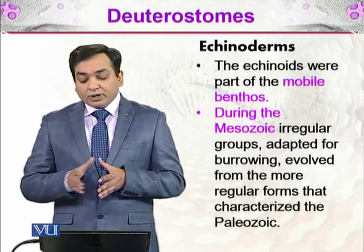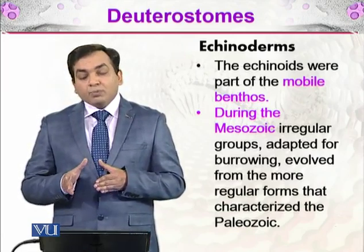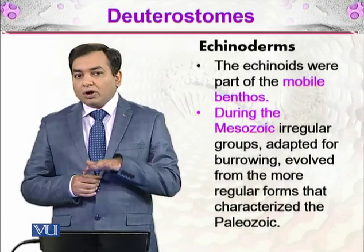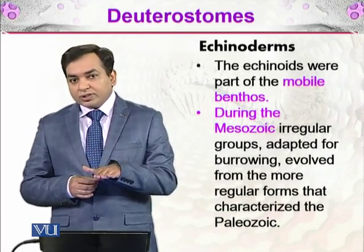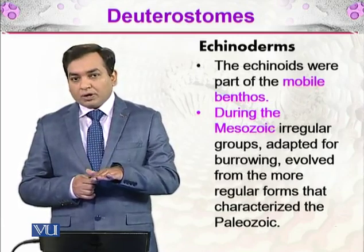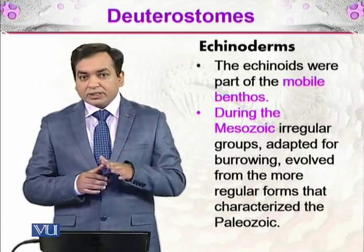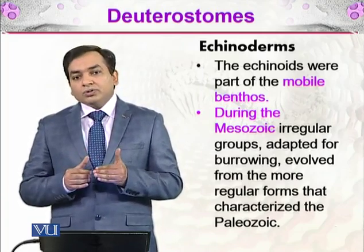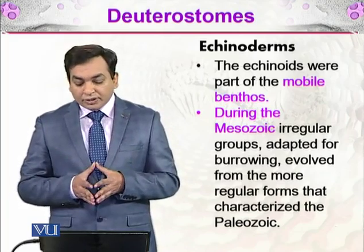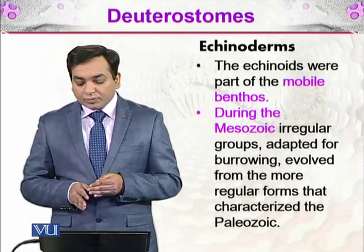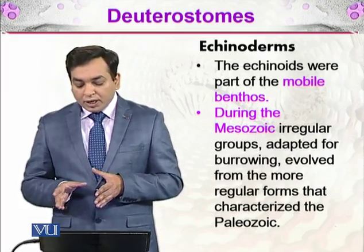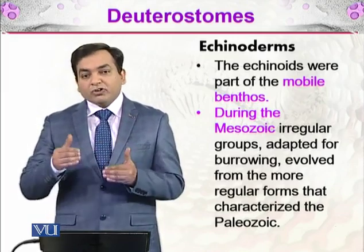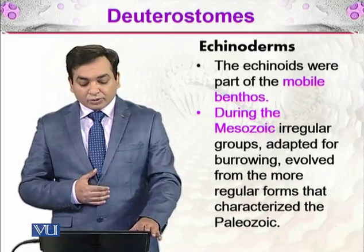The echinoids were part of the mobile benthos. Benthic organisms are those living at the surface of the lower part of the sea where sediments are present, and mobile benthos are organisms that move there. During the Mesozoic, an irregular group adapted for burrowing evolved from the more regular forms that characterized the Palaeozoic, so some organisms inhabited different niches including burrowing beneath the benthos.